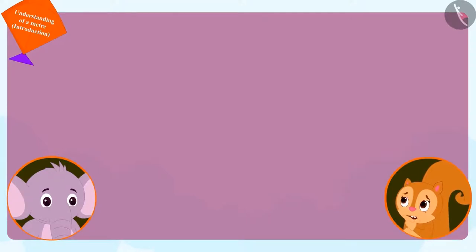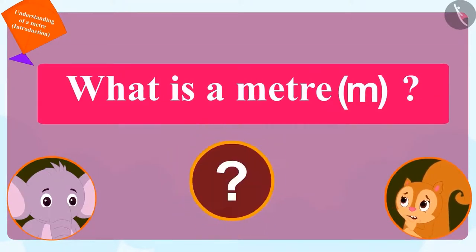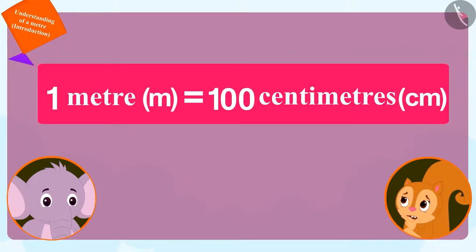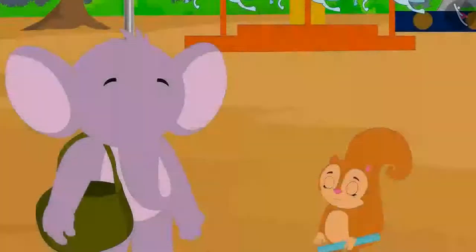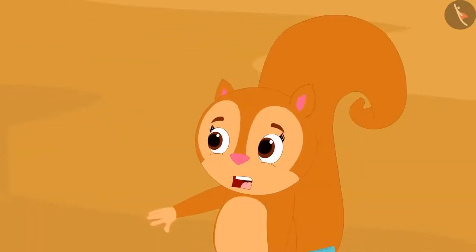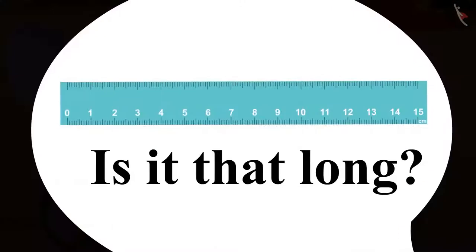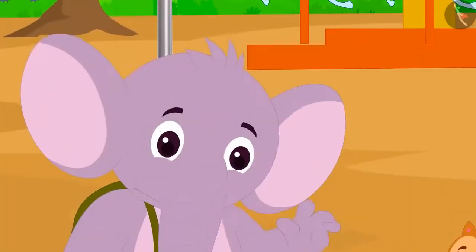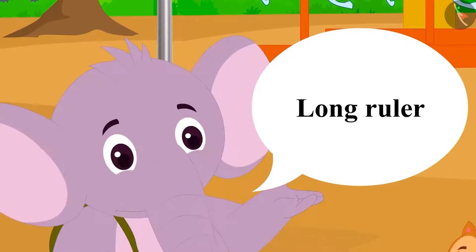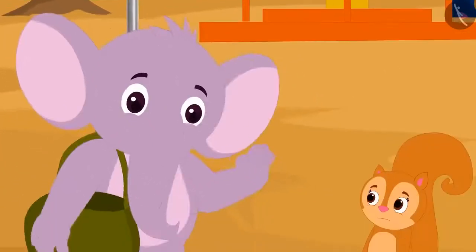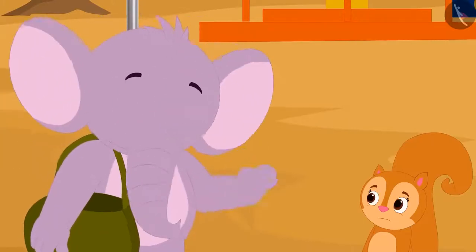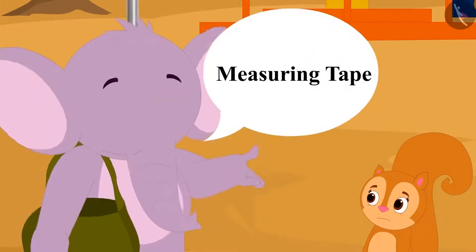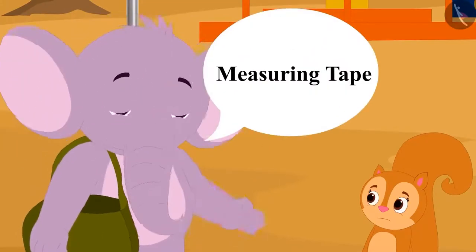Chanda immediately asked Appu, what is this meter? Appu then explained to her that one meter is equal to hundred centimeters. Chanda was shocked and asked Appu if it is possible to make such a long ruler. Appu replied that yes, there is a long ruler to measure in meters, but if we have to measure the length of any object in meters, we can do this more easily by using a measuring tape.